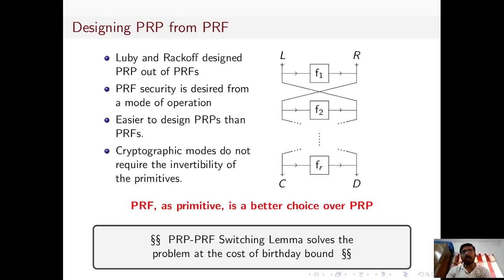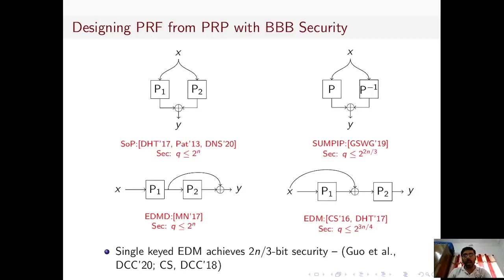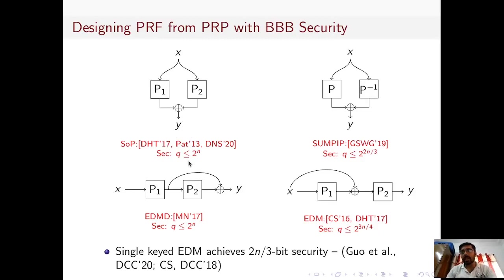Over the years, many such constructions have been proposed. The first construction, which we call the Sum of Permutations construction, is a very popular block-cipher-based PRF that takes an n-bit input and gives an n-bit output, which is nothing but the XOR of two permutations evaluated at the input x. It has been shown that this construction is optimally secure.